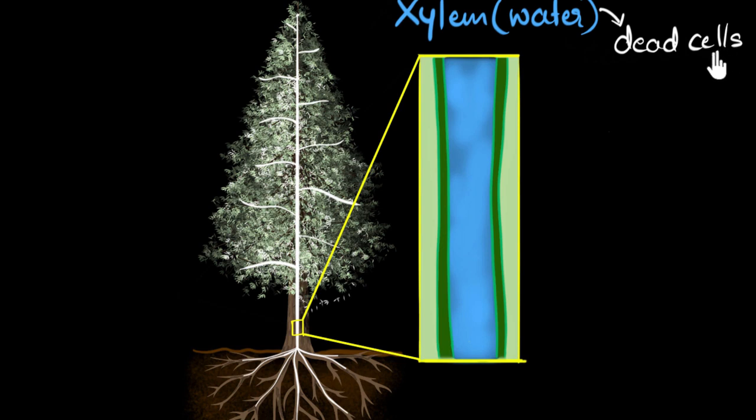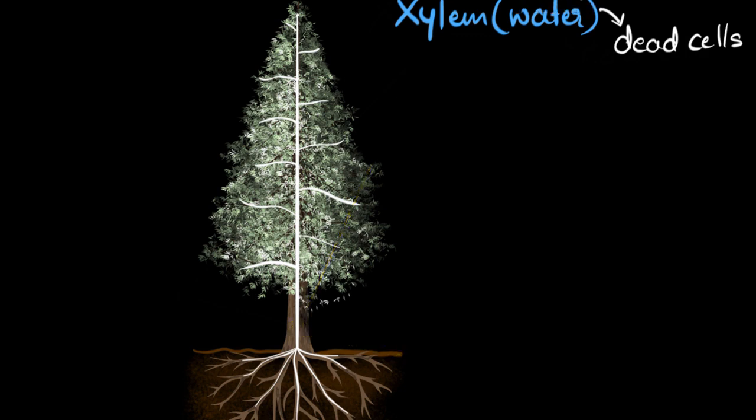This might make you wonder, if these cells have lost all of their organelles, how are they staying alive? The answer is, they aren't. They're all dead. And so, important to remember that xylem is made of dead cells. They're no longer alive. And just to contrast, turns out that phloem is made of living cells. We'll get to that in another video. But xylem is made of dead cells. And so, now to the big question. How does the water climb up these xylem vessels?